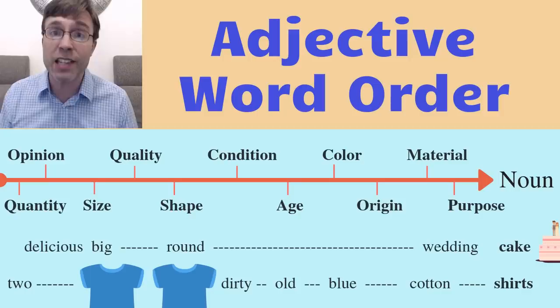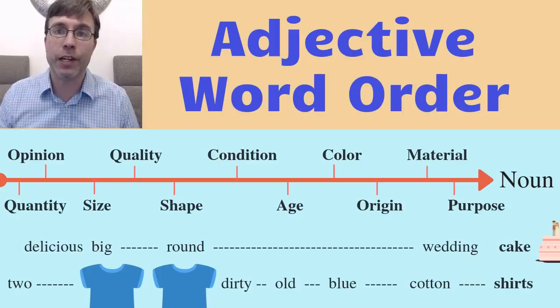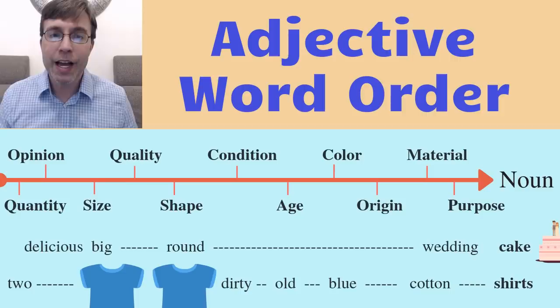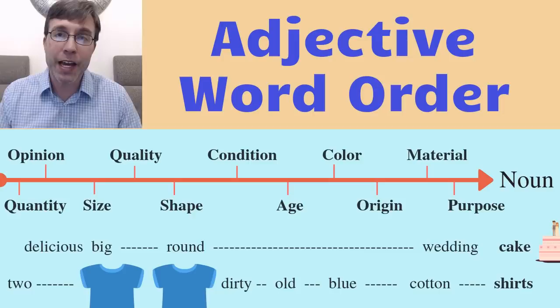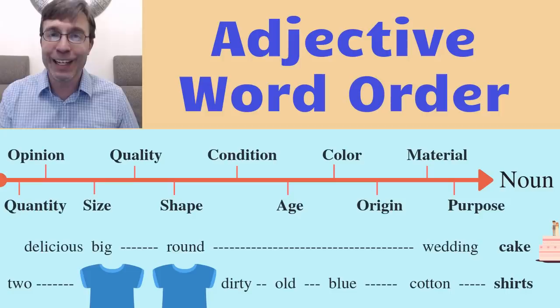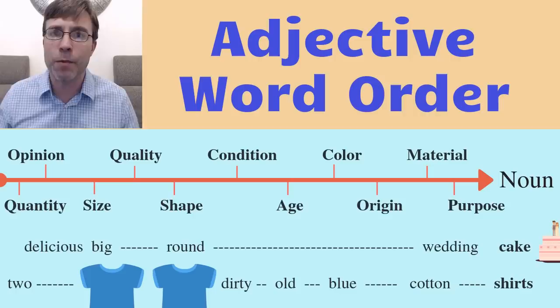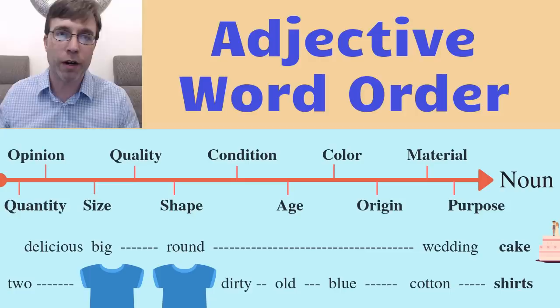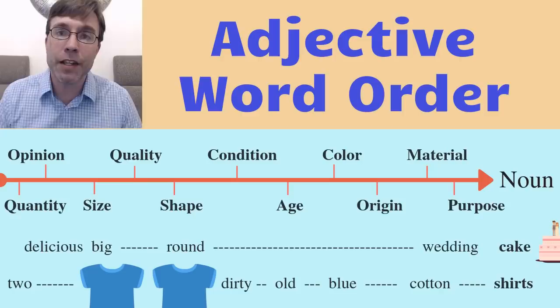Quality would be next — the physical quality of something. For example, if something is thin, thick, or rough, we're talking about the physical quality of a noun. After quality, you talk about shape: round, square, oval. Then condition — is something clean, dirty, messy? Then age — something is old, new, or ancient. Then color: blue, green, red, yellow. Then origin, talking about a country — where something was made, like American, Brazilian, French, or Chinese. Finally, material — a shirt might be cotton, plaid, or silk — and then purpose: what is the purpose of this noun?